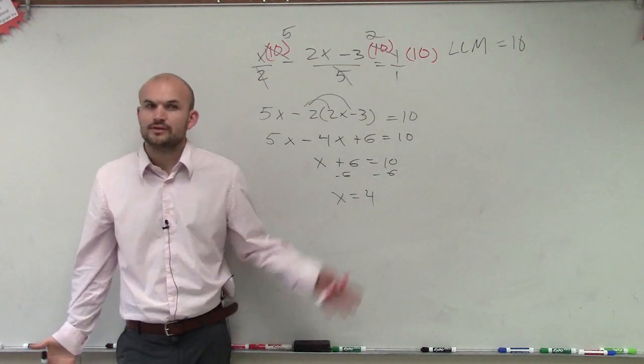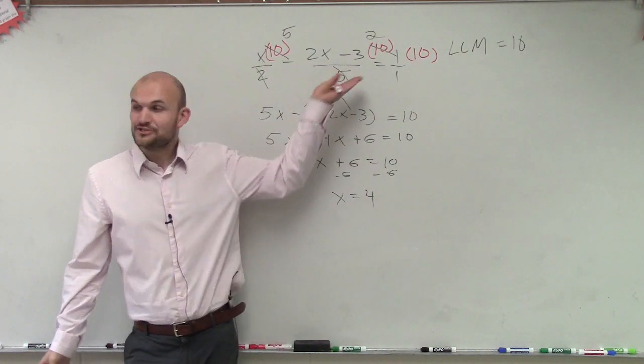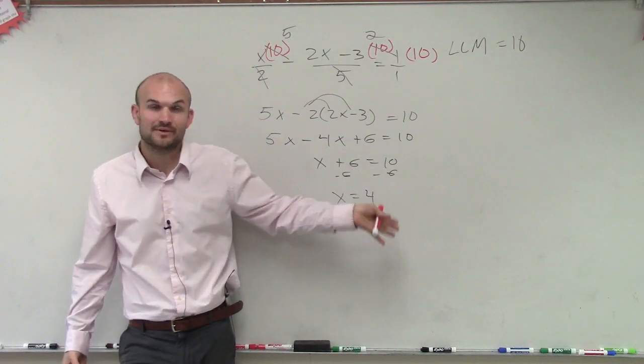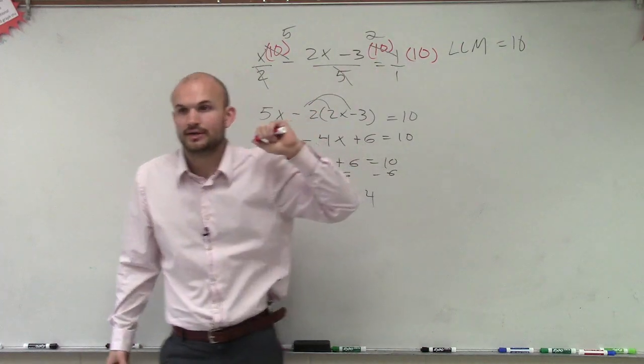So the main important thing about rational equations is they are easy once you eliminate the denominators. So you've got to eliminate the denominators. How do you eliminate the denominators? Find the least common multiple of your denominators and then multiply every term by that value.